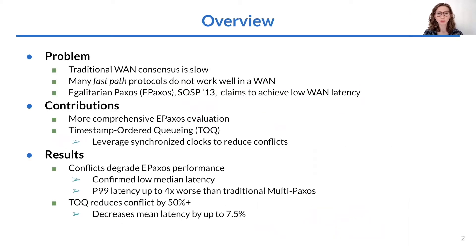The overall problem guiding our work is that traditional consensus is slow when used in a wide area network, taking two wide area round trip times to complete an operation. There are a number of protocols that reduce latency for many operations to one RTT by having them take a fast path, but these typically don't work well in a WAN because a large enough percentage of operations takes the slow path, or conflicts, to mitigate the benefits gained from the fast path.